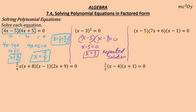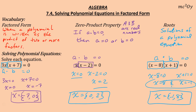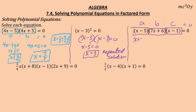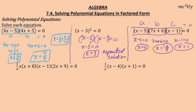Now I have three sets: (x − 5), (7x + 6), and (x − 1). It's like having A, B, and C — we're still multiplying, so one of those three equals zero. Setting x − 5 = 0 gives x = 5. Setting 7x + 6 = 0 — subtract 6, divide by 7 — gives x = −6/7. Setting x − 1 = 0 gives x = 1. So my three solutions are {−6/7, 1, 5}.